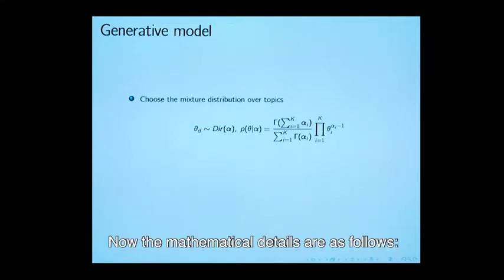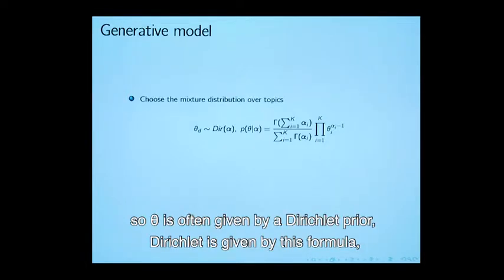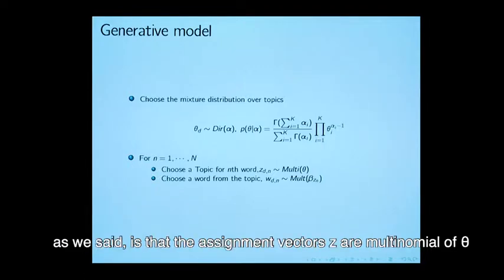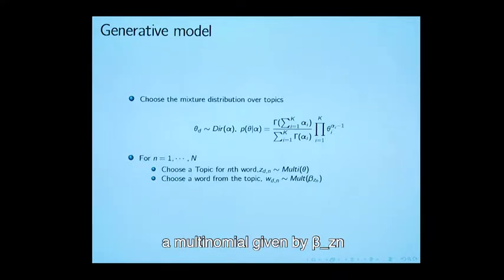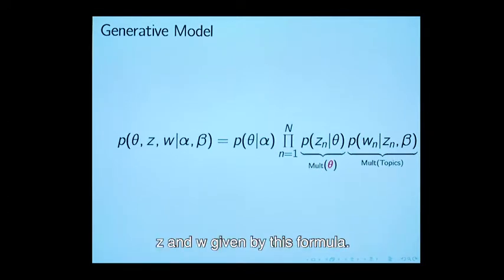The mathematical details are as follows. We need a distributional assumption on the vector theta. Theta is often given by a Dirichlet prior. Dirichlet is given by this formula. Once we have this theta vectors defined, the model can be written as: the assignment vectors z are a multinomial of theta, while the word from the topic is also given by a multinomial given by beta z n. Given this model, we can now define a joint likelihood of theta z and w, given by this formula.